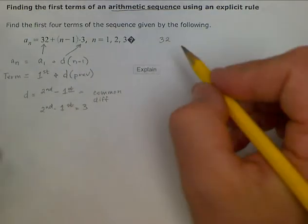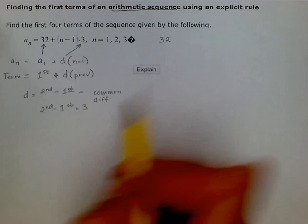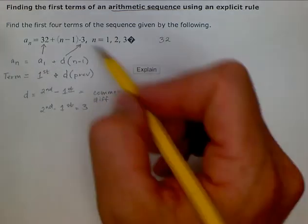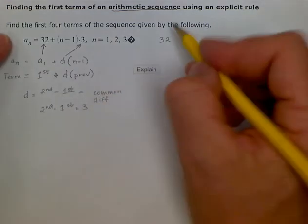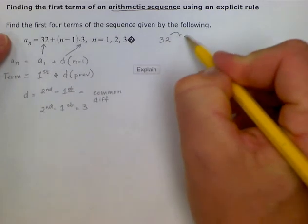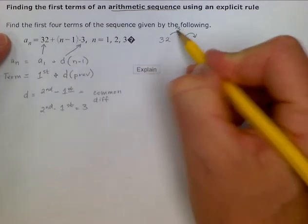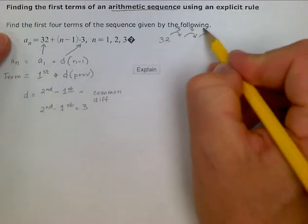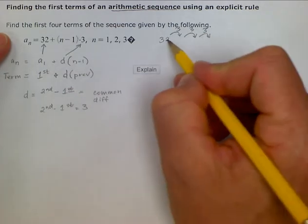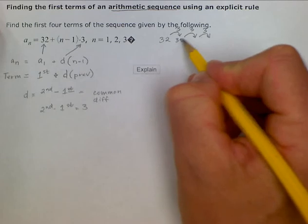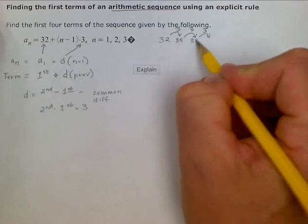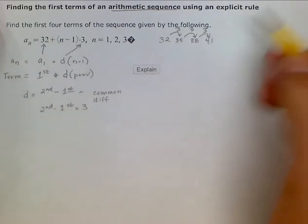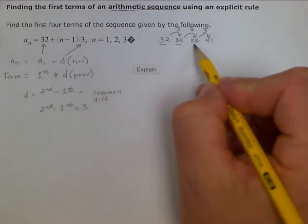Now, in order to find the second one, we could just add our common difference. Because we know that we're going to have a common difference of a positive 3 each time. So, 32 plus 3 is going to be 35, plus 3 is going to be 38, plus 3 is going to be 41, and we could be done. Those are going to be the first four terms of the sequence.